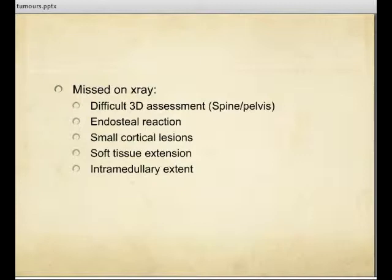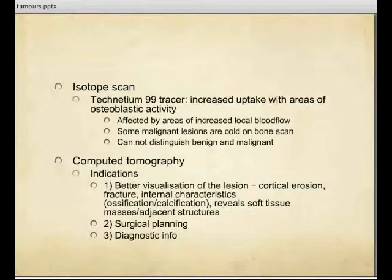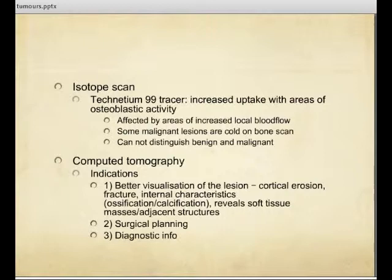Other options to help us include isotopes — a technetium scan which shows increased uptake in areas of osteoblastic activity. This is however affected by areas of increased blood flow for other reasons, and some malignant lesions don't become hot on bone scans. CT gives us increased visualisation of the cortex to give a better idea for surgical planning. And MRI gives us more information on the soft tissues.